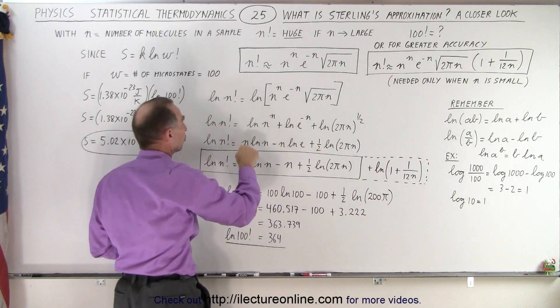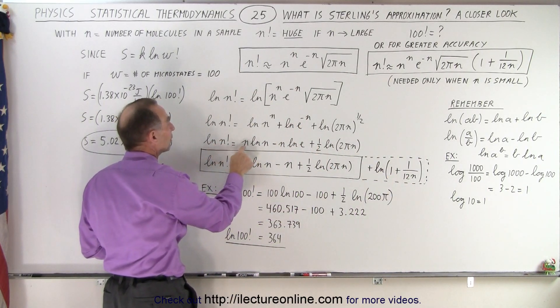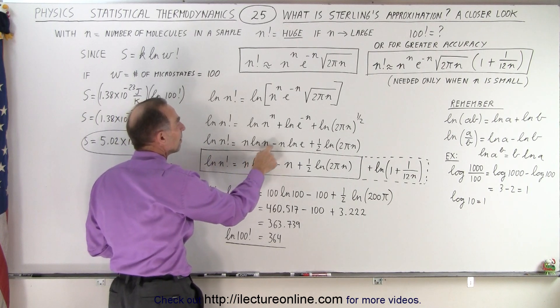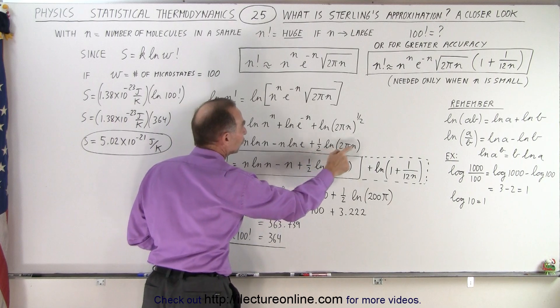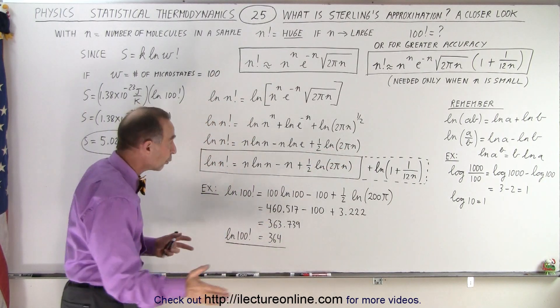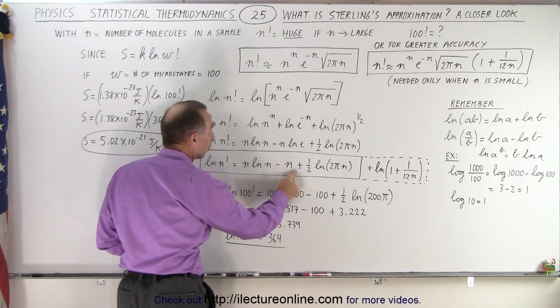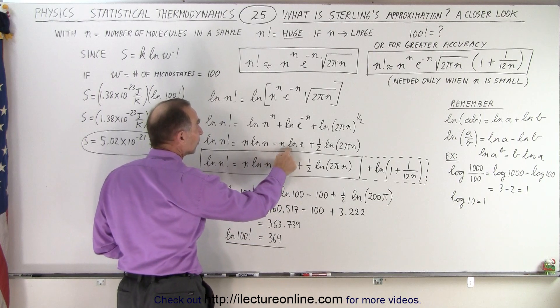And then using the rule of exponents we bring the exponents to the front so the natural log of n factorial equals n times the natural log of n minus n times the natural log of e plus one half times the natural log of 2 pi n. And of course the natural log of e is simply 1, so minus n times the natural log of e simply changes to minus n.